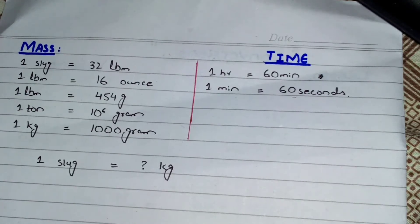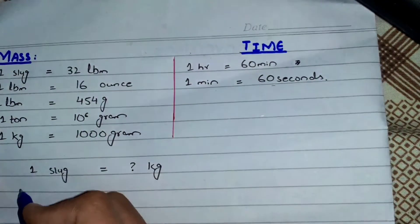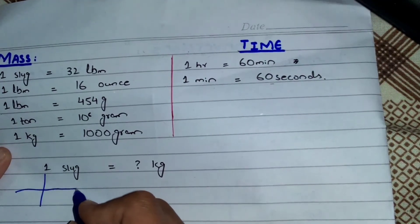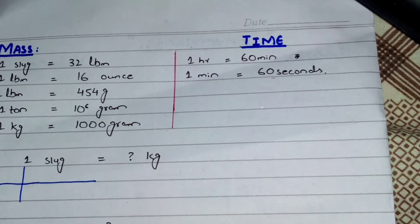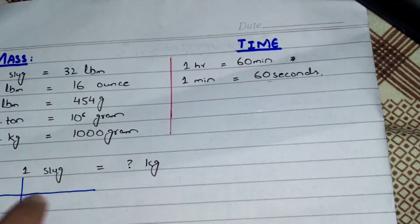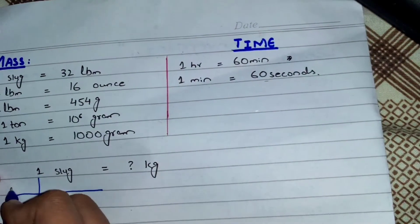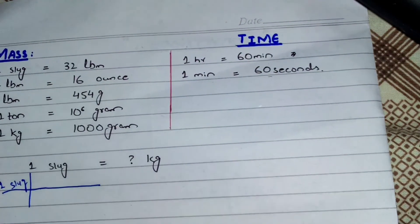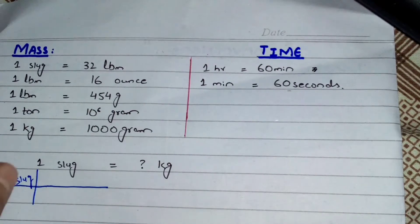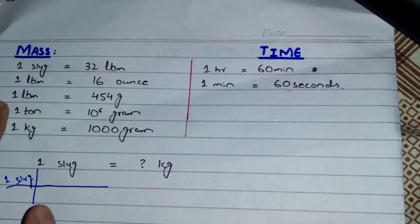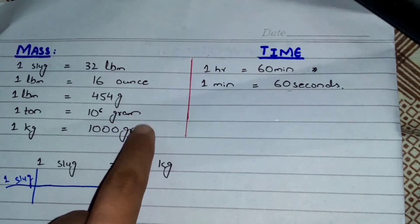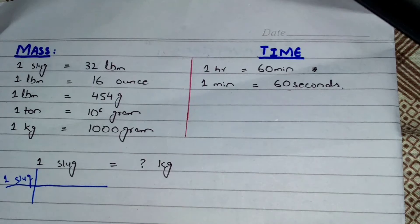Let's start solving. When we are given one slug, we write it in our conversion setup. I don't know the direct conversion factor from slug to kg, but I know some alternate steps: I know slug to lbm conversion, then lbm to gram conversion, and then gram to kg conversion. These will be my three steps to convert slug to kg.